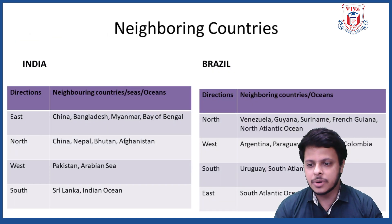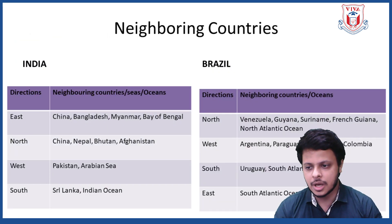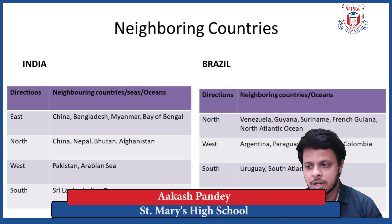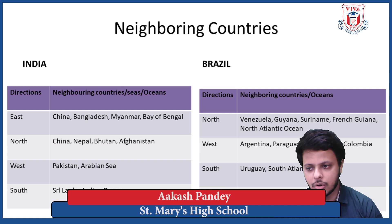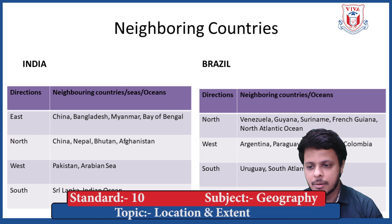The countries neighboring India are: towards the east side we have China, Bangladesh, Myanmar, and the Bay of Bengal. Towards the north side we have China, Nepal, Bhutan, and Afghanistan. Towards the western side we are surrounded by Pakistan and the Arabian Sea.